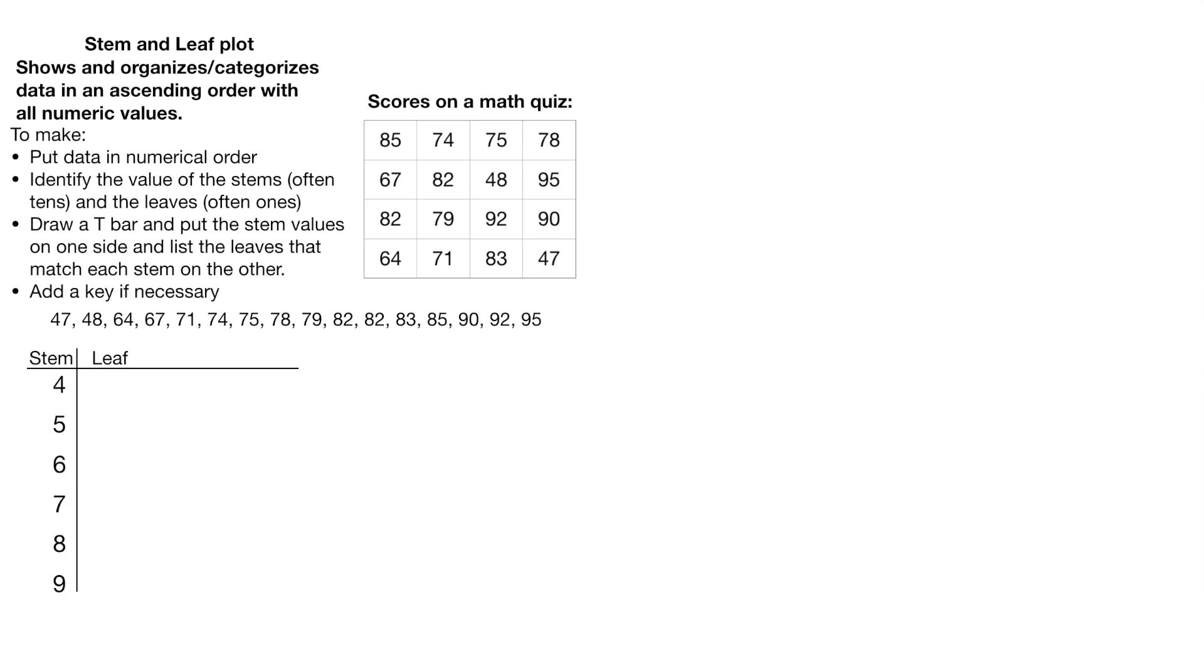So this is what that looks like. So I'm going to put a 4, 5, 6, 7, 8, and 9 on the left. Now this 4 right here does not actually represent a 4. Again, it represents 40. So any value, so I have a 47 and a 48. So I'm going to put a 7 comma and then an 8. So now this 7 right here does not represent the number 7. It represents 47. This 8 right here does not represent the number 8. It represents 48.